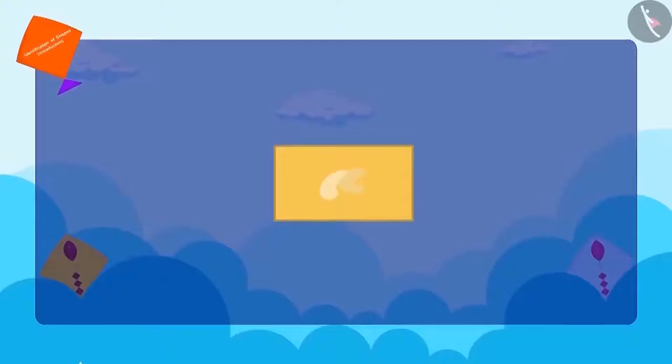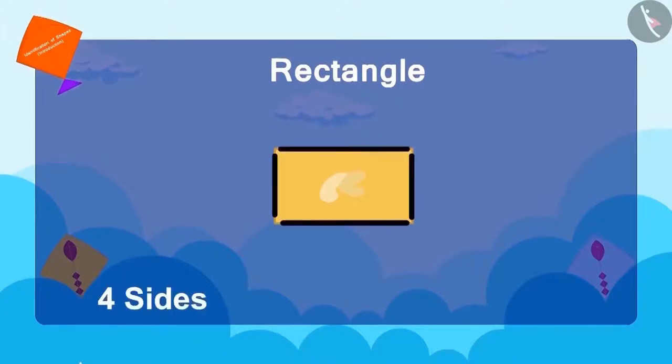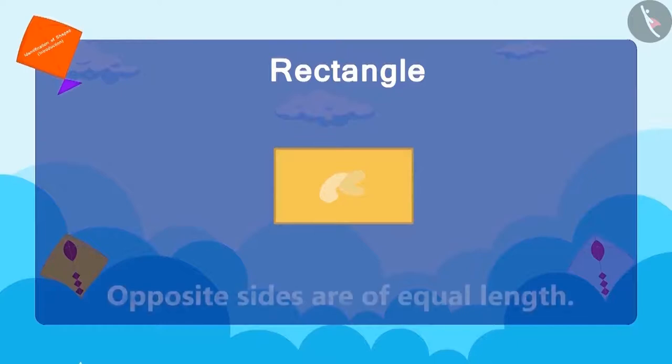Have you seen this shape before? This is a rectangle. A rectangle has four sides. Its opposite sides are of equal length.